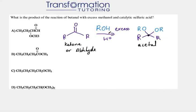To easily predict the product of acetal formation, we look for the carbon that had the double bond O, which is called the carbonyl carbon. We get rid of the double bond O and attach two OR groups — two alcohol groups — in its place. This is our acetal: a carbon that has two OR groups on it.